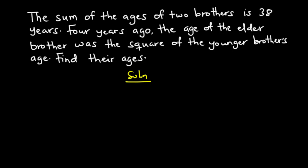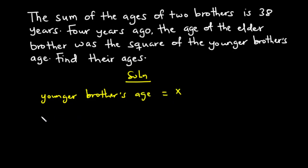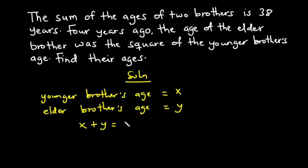Let's take some key points from the question. The sum of the ages of two brothers is 38 years, and there is a younger brother and an elder brother. Let's represent the younger brother's age with the variable x and the elder brother's age with the variable y. From the first statement, the sum of their ages equals 38, so we have x plus y equals 38. Let's call this equation one.